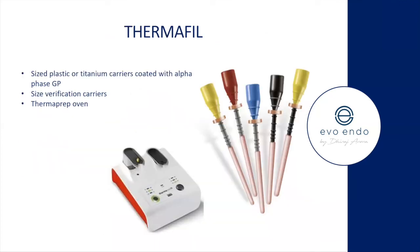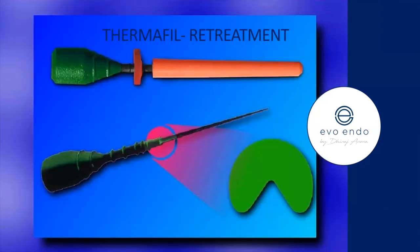If you haven't seen Thermafil — there are plastic or titanium carriers coated with alpha-phase GP, heated up in an oven, then placed within the root canal system. Before heating, you use verification carriers to take a check X-ray. For retreatment, they've created a notch which you can look for and insert a hand instrument — normally a Hedstrom file — within that space to try and lift out the carrier.